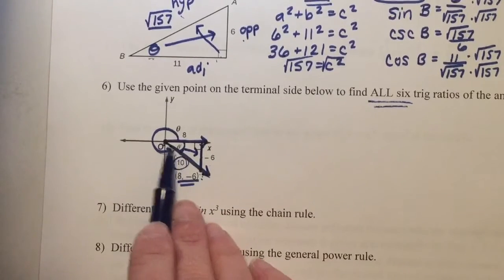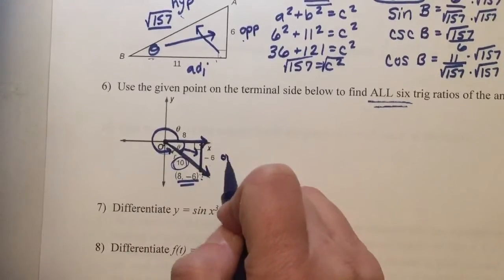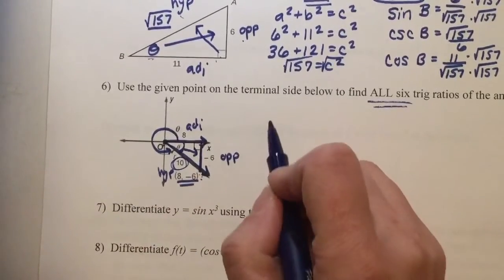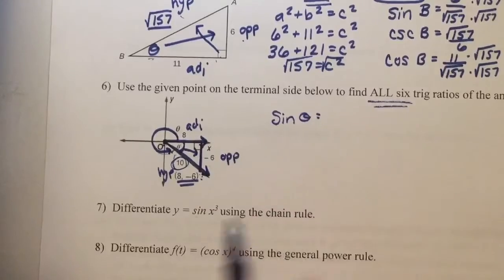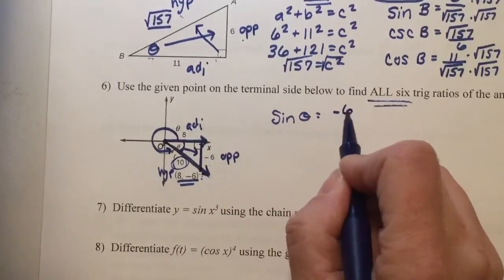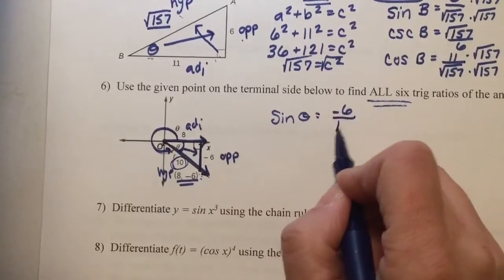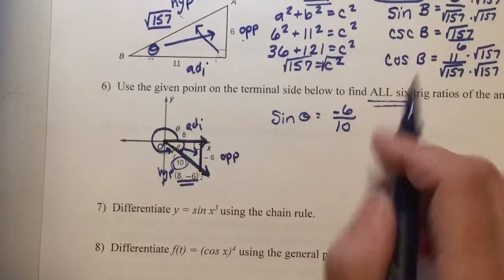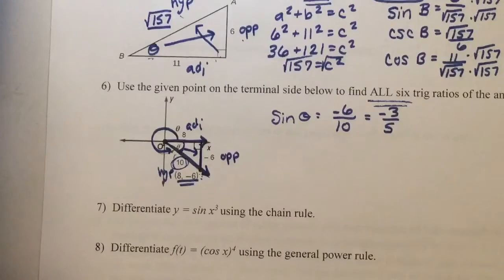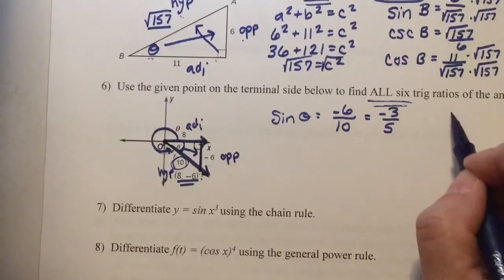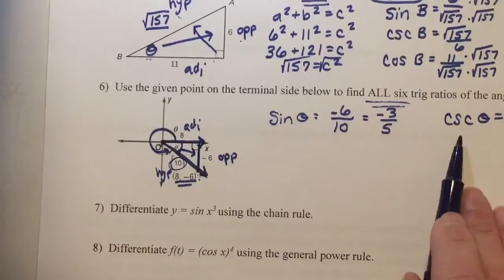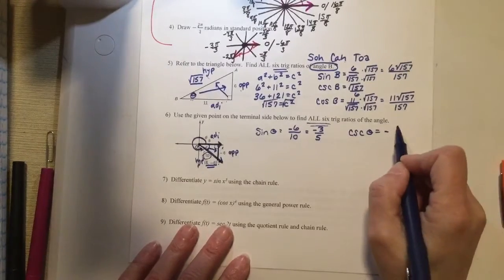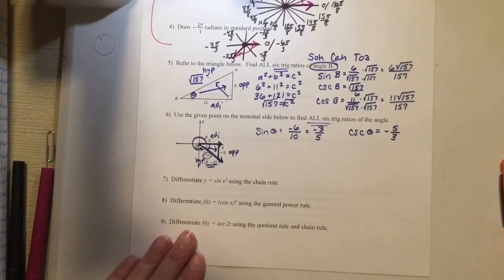Across from theta — and theta will always be next to the origin — across from theta is the opposite. Across from 90 is the hypotenuse. The third side is the adjacent. So the sine of theta: sine is opposite over hypotenuse — negative 6 over 10. Divide both top and bottom by 2 and I have negative 3 fifths. The cosecant of theta is the reciprocal of the sine. So if the sine is negative 3 fifths, the cosecant is negative 5 thirds — you just do the reciprocal.